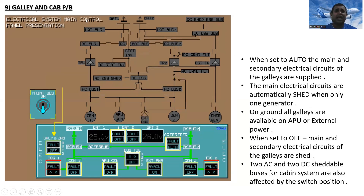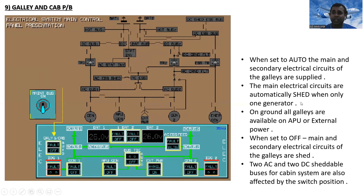The galley and cabin push button: when set to auto, the main and secondary electrical circuits of the galleys are supplied, and the main electrical circuits are automatically shed when only one generator is available. On the ground, all galleys are available on APU or external power. When set to off, main and secondary electrical circuits of the galleys are shed. Two AC and two DC shedable buses for cabin systems are also affected by the switch position.